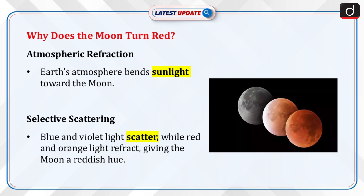Now let's understand why the moon turns red. Earth's atmosphere acts as a lens, bending sunlight toward the moon. Blue and violet light scatter, while red and orange light refracts, giving the moon its reddish hue.